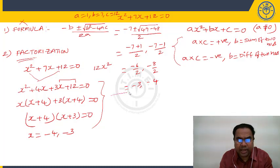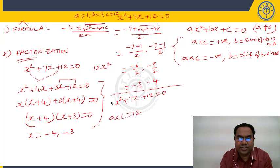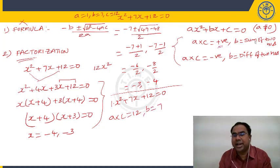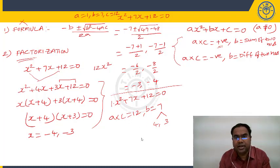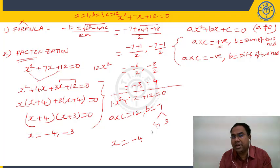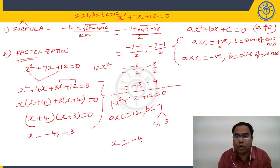Applying the shortcut to X² + 7X + 12 = 0: A×C = 1×12 = 12, B = 7. A×C is positive, so write B as sum of two numbers. 7 = 4+3; 4+3=7 and 4×3=12. While writing the roots, change the sign: +4 becomes −4, +3 becomes −3. Divide by the coefficient of X², which is 1. So roots are −4/1 = −4 and −3/1 = −3.